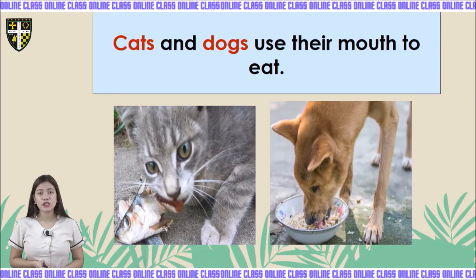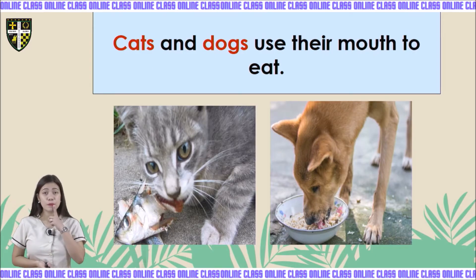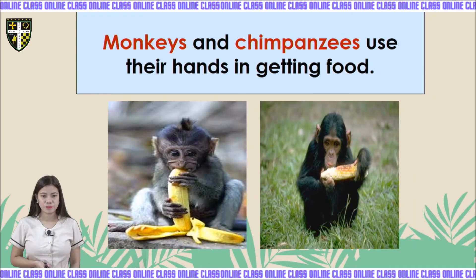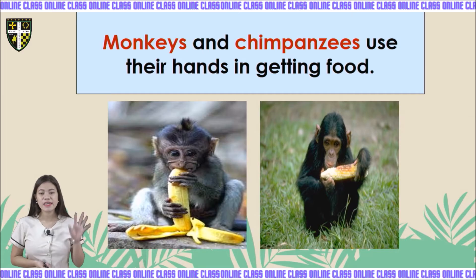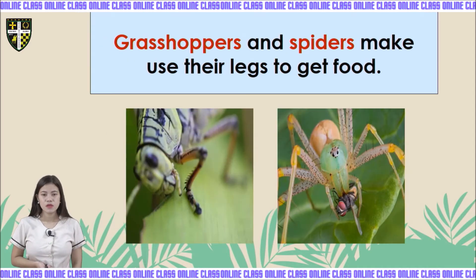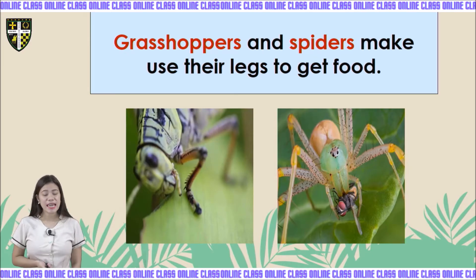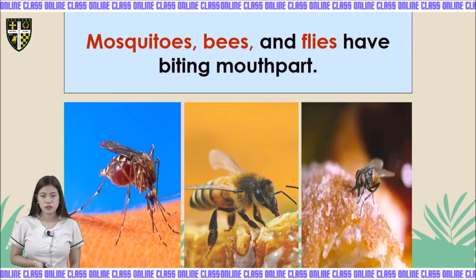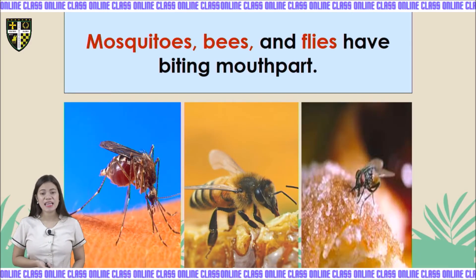Cats and dogs use their mouth to eat, while monkeys and chimpanzees use their hands in getting food. Grasshoppers and spiders use their legs to get food. Mosquitoes, bees, and flies have piercing mouth parts.